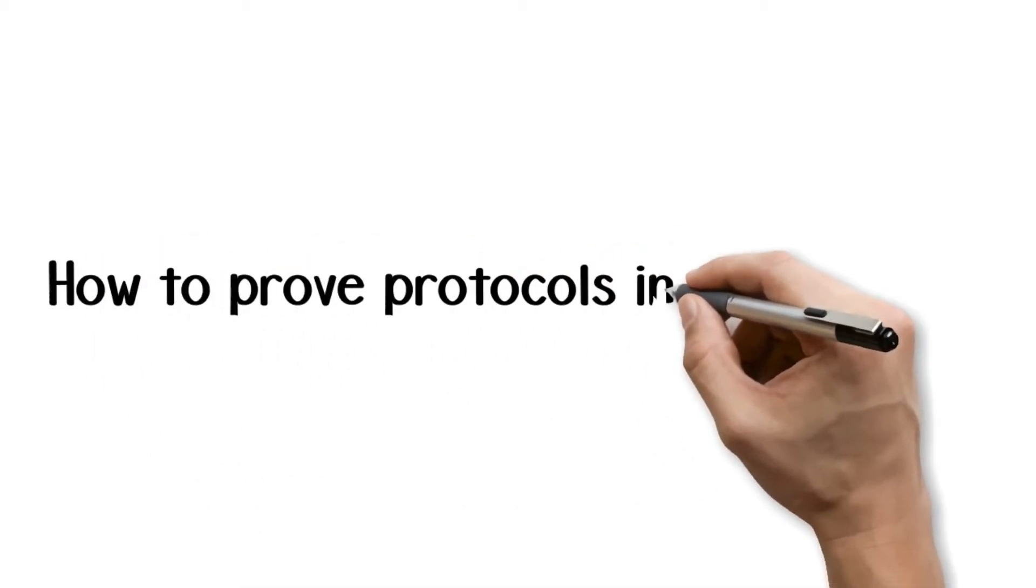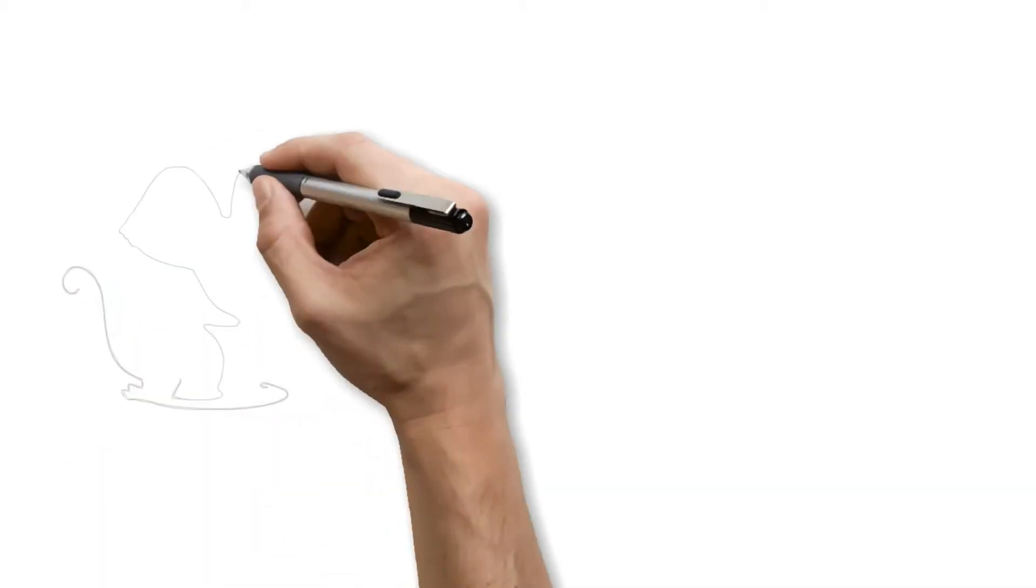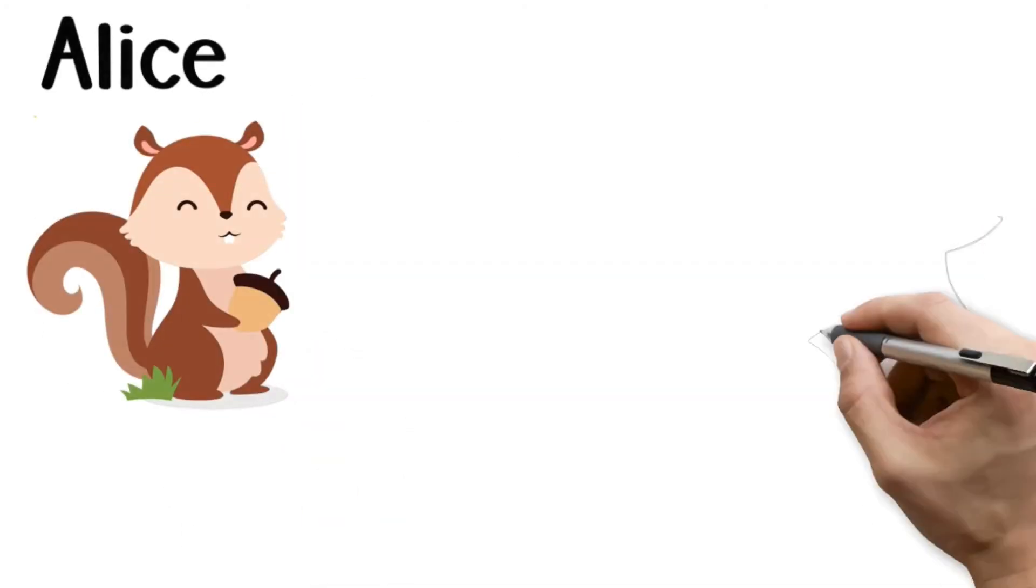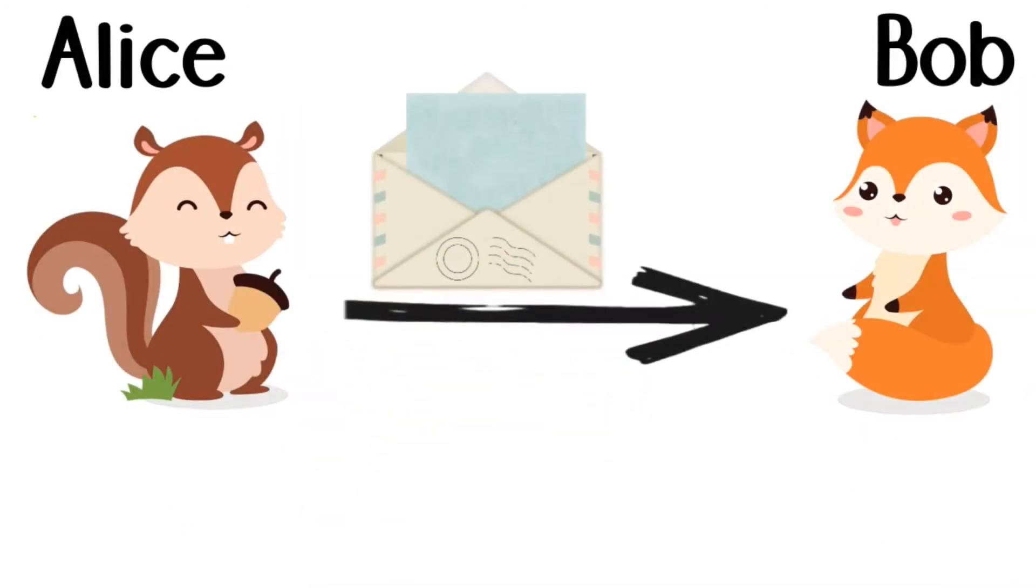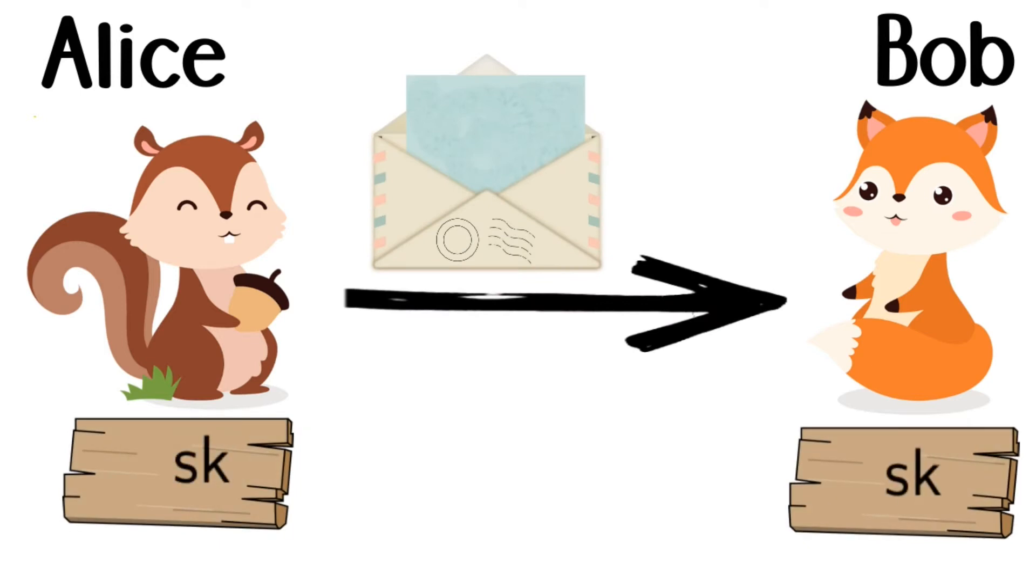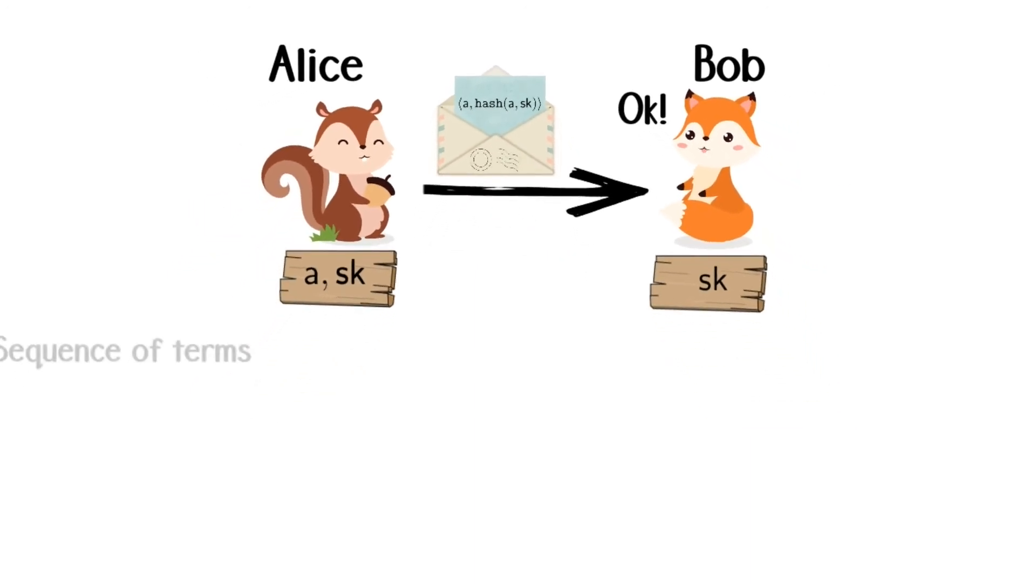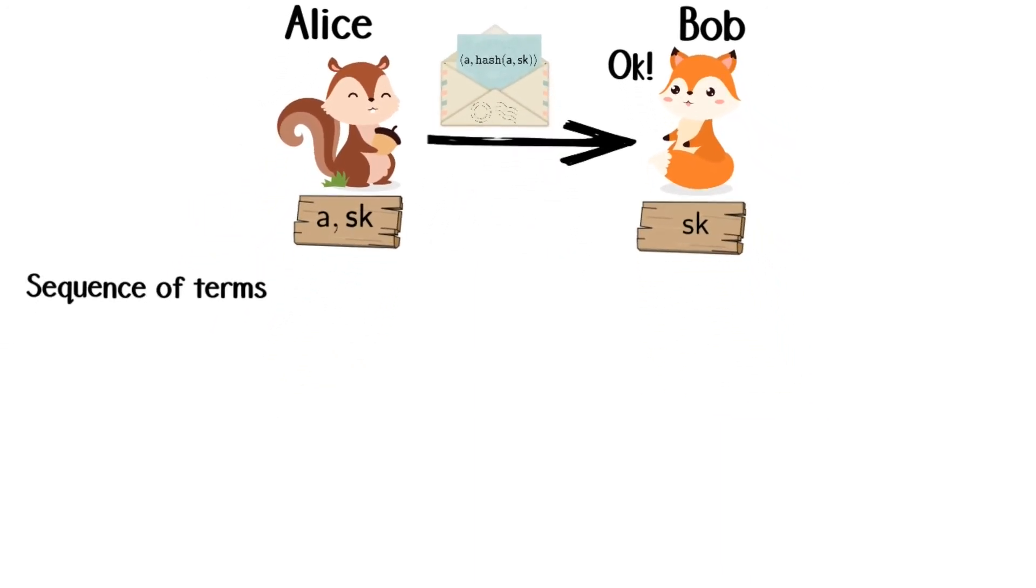How to prove protocols in the BC logic? The idea is to fully describe the possible behaviors of the protocol. We just look at a simple protocol, where using a shared key, sk, Alice authenticates a long A to Bob and this by sending the hash of A with sk to Bob. Bob answers OK if the hash is valid. We can describe this protocol using terms by writing down inside the logic the sequence of possible messages sent by the attacker over the network.